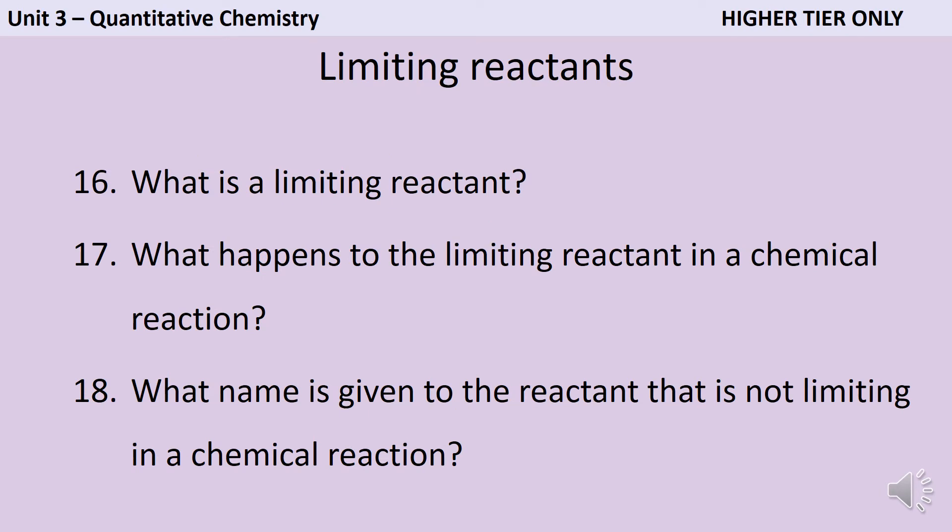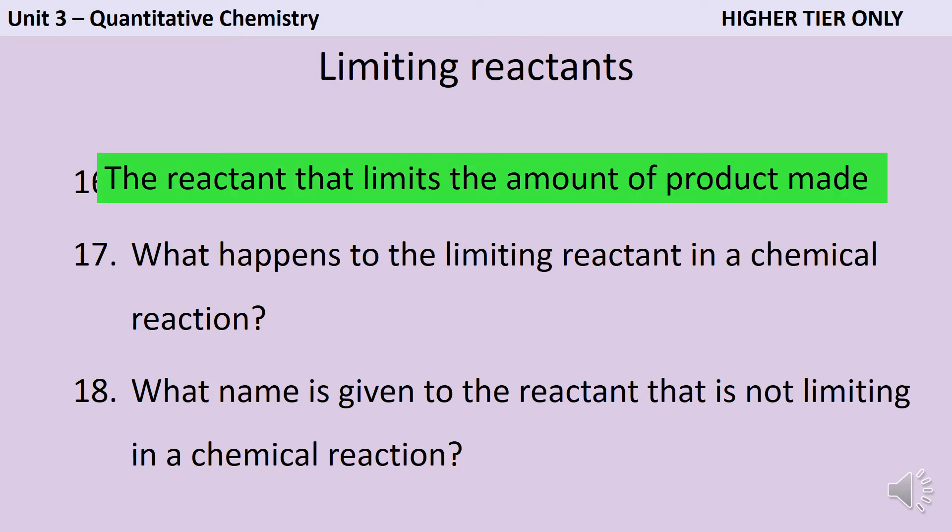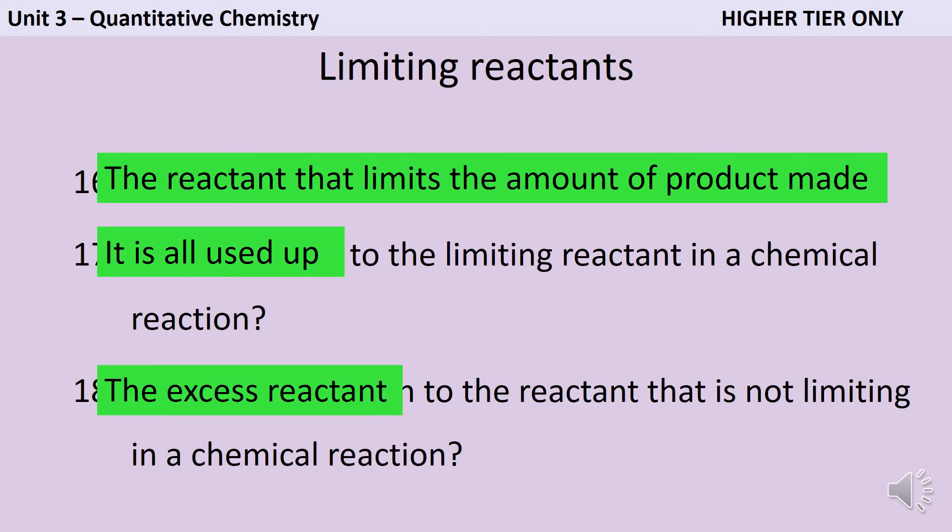In any chemical reaction containing more than one reactant, you're going to struggle to have exactly the right amount of each reactant to make sure the reaction works out perfectly. So the limiting reactant is the one that's going to control the amount of product that you can make, because there isn't enough of it, and all of it is going to be used up. The other reactant is referred to as the excess reactant.